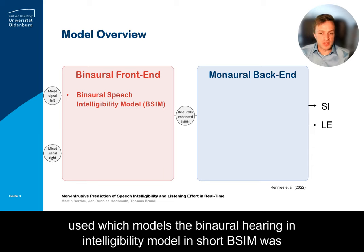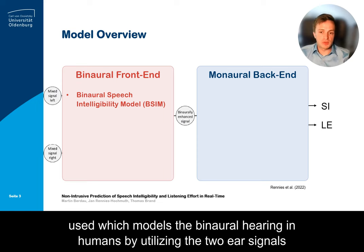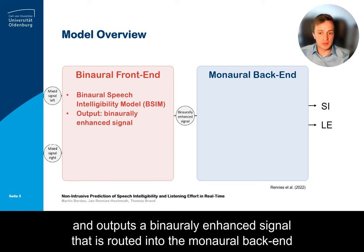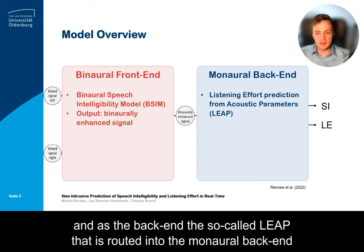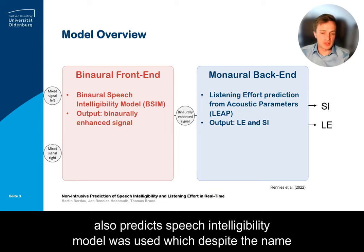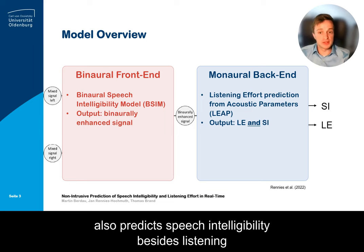BISIM models binaural hearing in humans by utilizing the two ear signals and outputs a binaurally enhanced signal that is routed into the monaural back end. As a back end, the so-called LEAP model was used, which despite the name also predicts speech intelligibility besides listening effort.